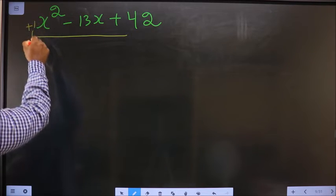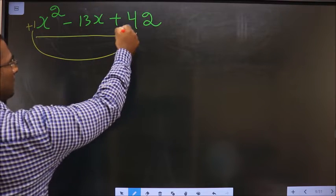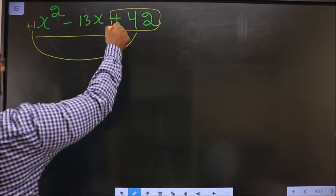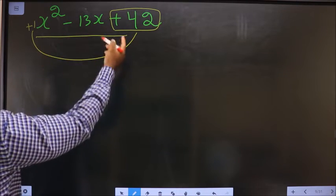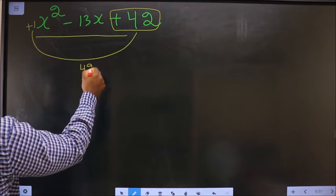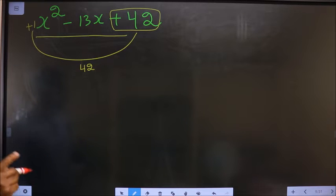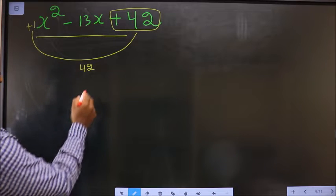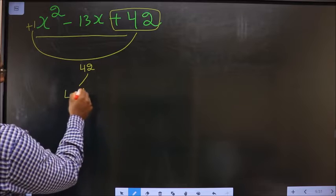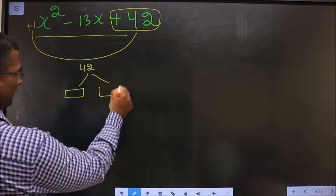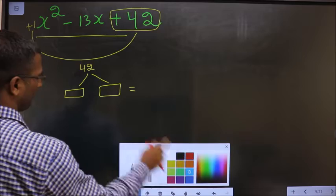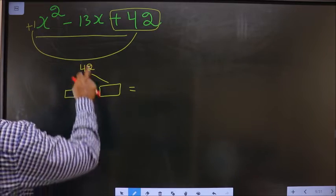That is +42 in this case, so 1 into 42 is 42. Clear with step 1? Now look out for two numbers such that when you add the two numbers you should get this middle number, that is -13.